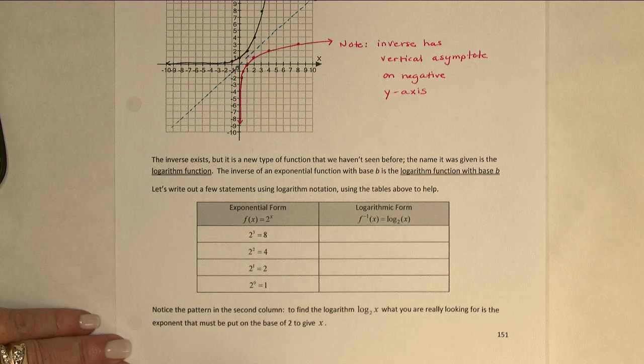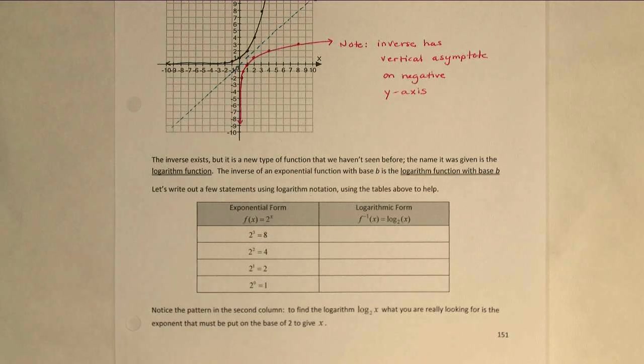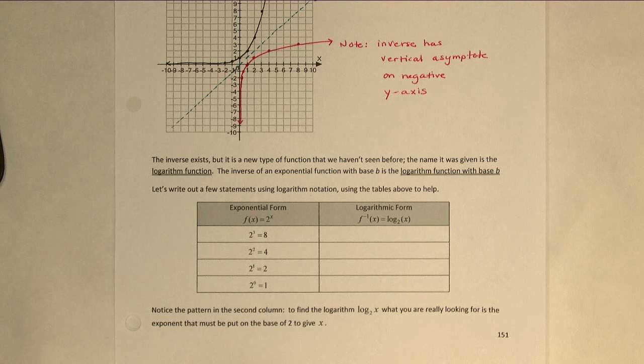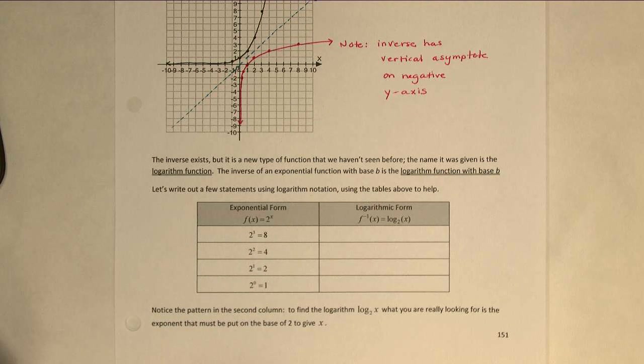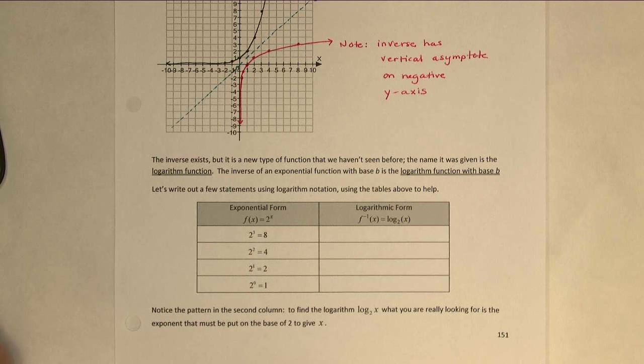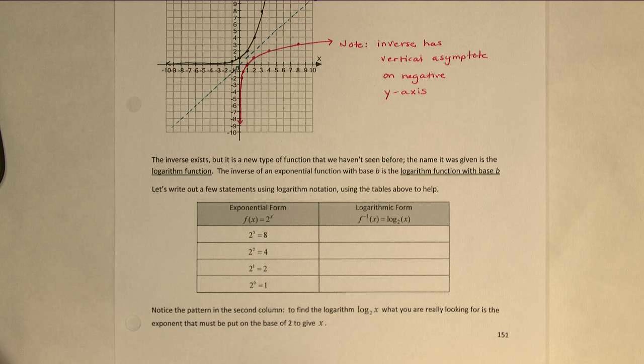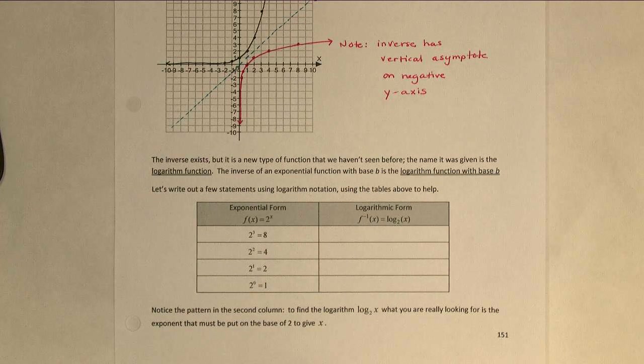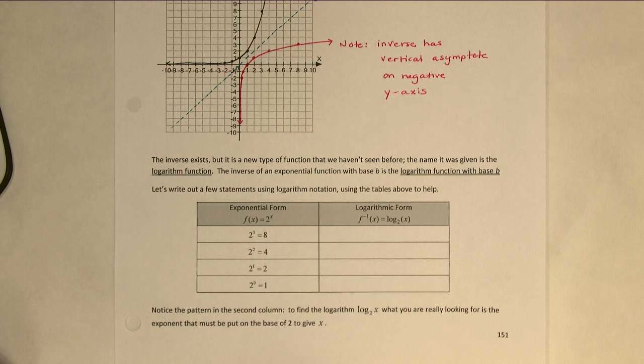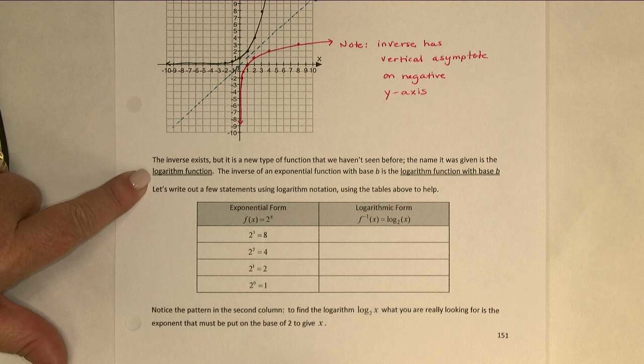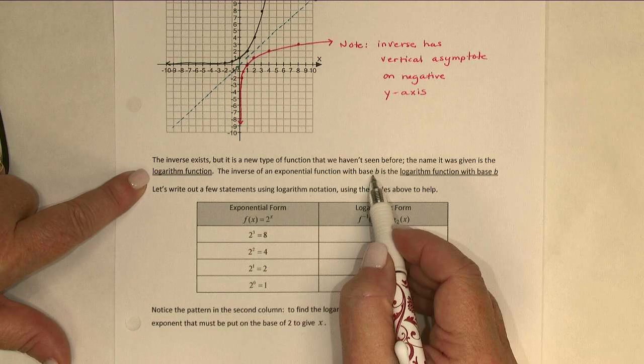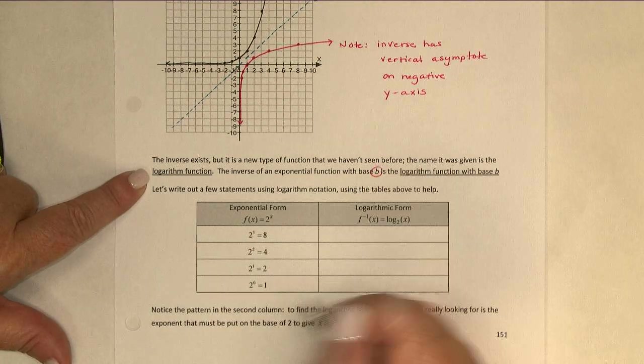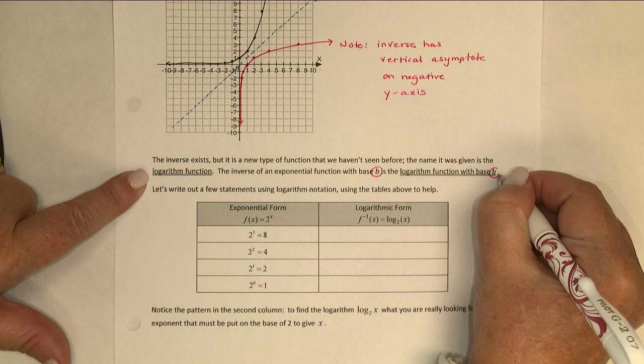The inverse certainly does exist. We saw it with the table when we swapped the x and y's. But this actually forms a new type of function that we haven't talked about before. Anytime we have something new, we give it a name. So the name selected for this new type of function, the inverse of the exponential function, was the logarithm function.